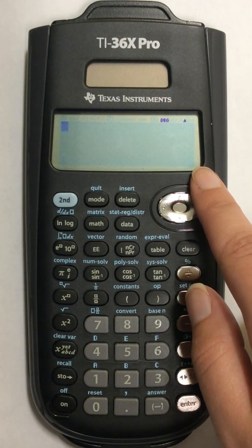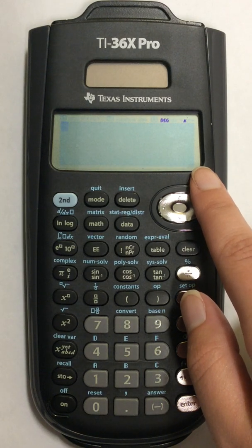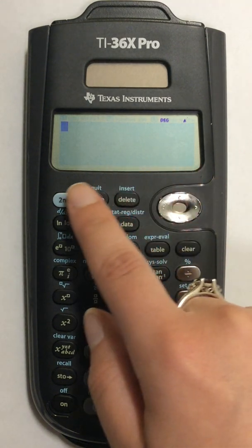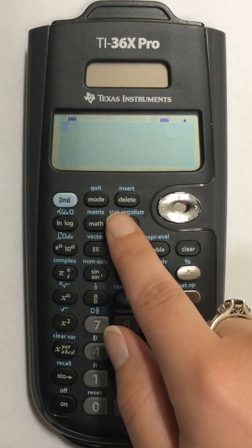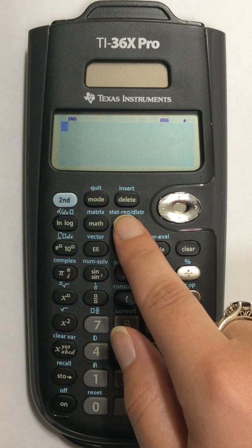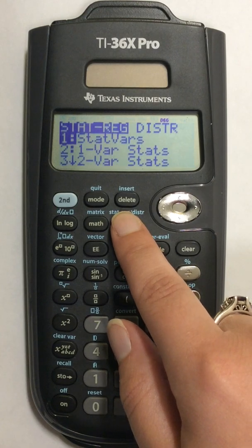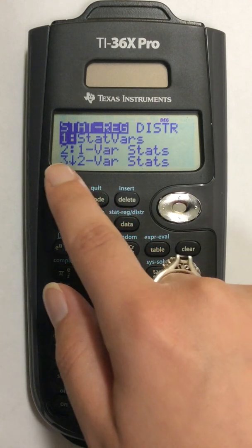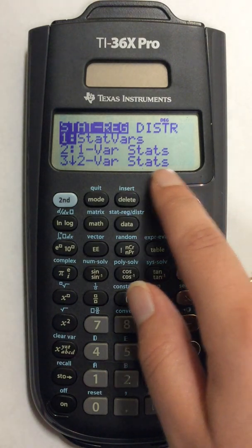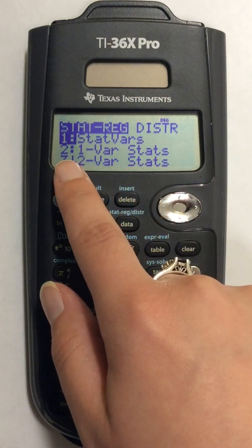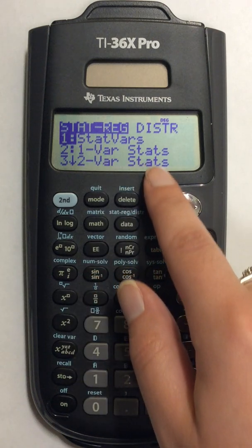To find the values for your five number summary I'm going to press the second button and then the button that says STAT REG. This next screen shows a list of options and I'm going to pick option two, one variable stats.